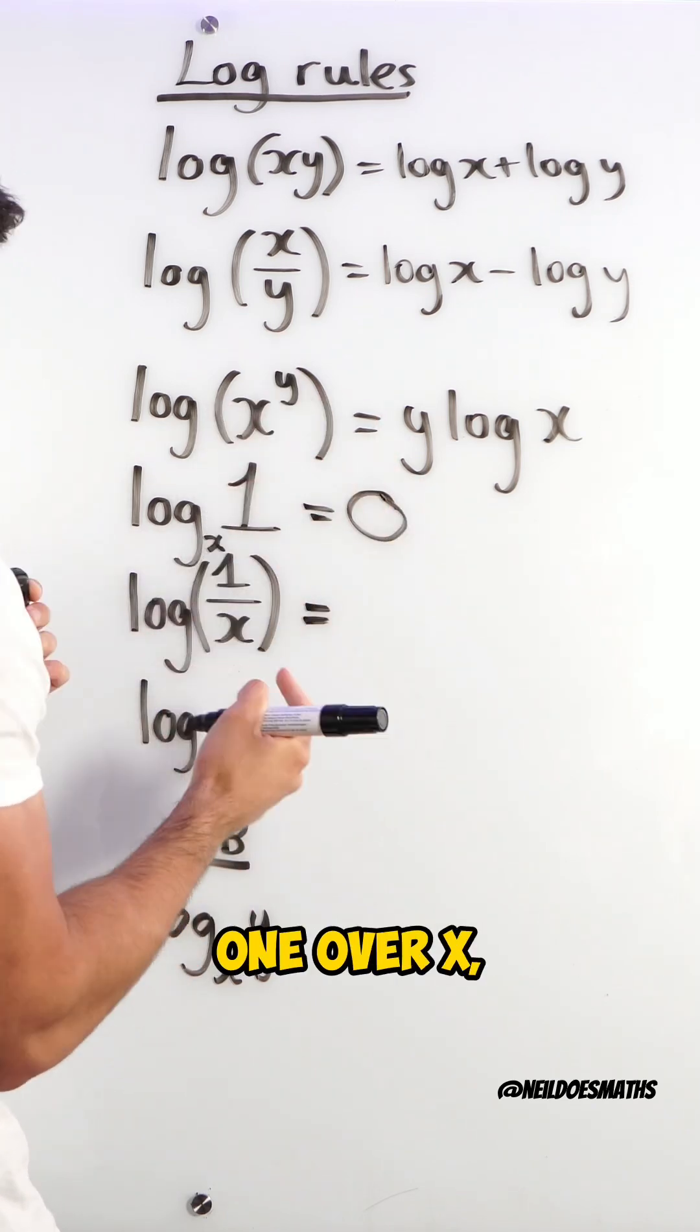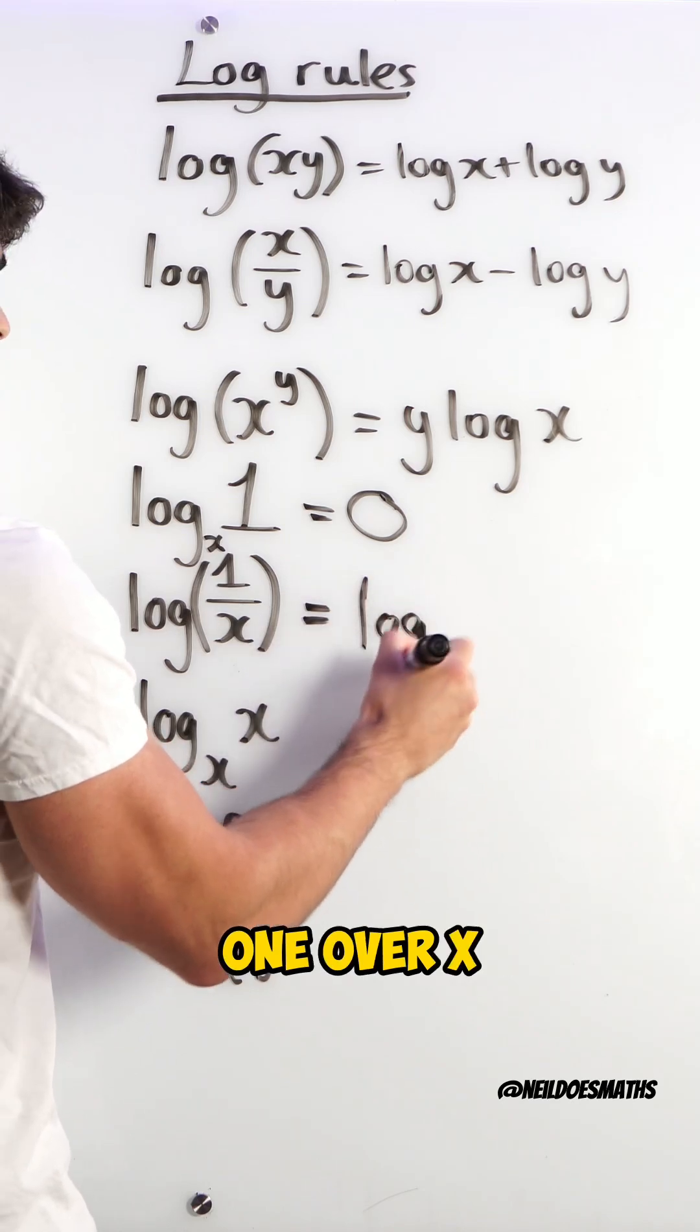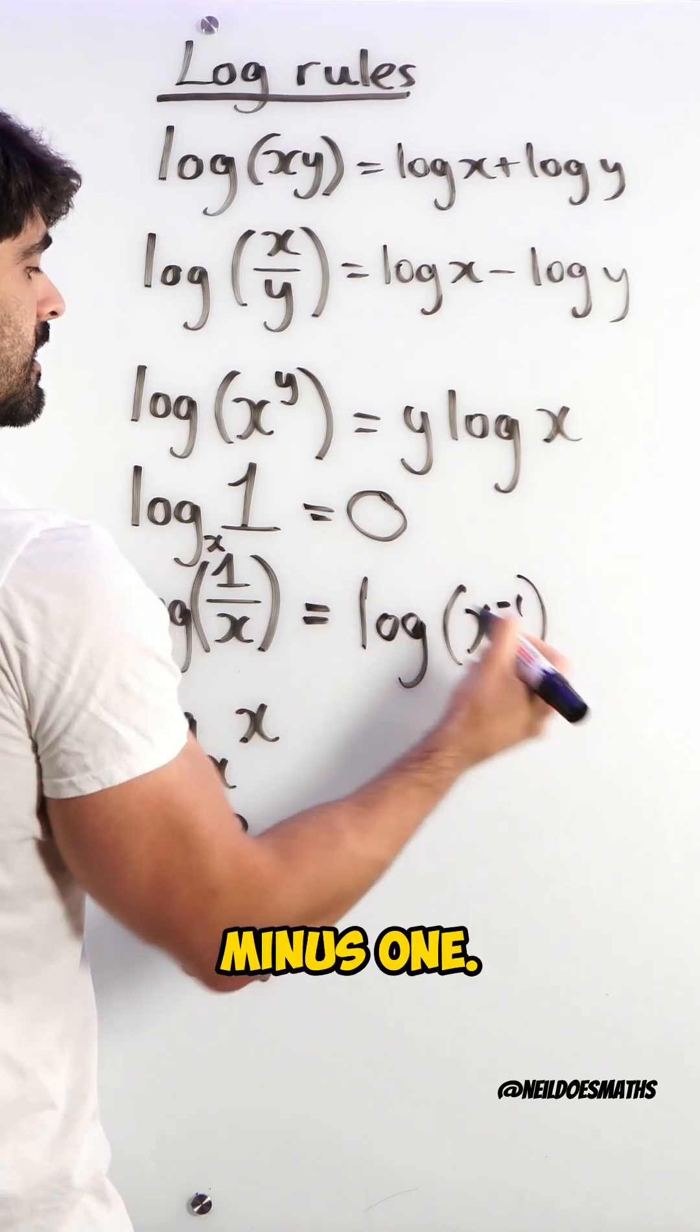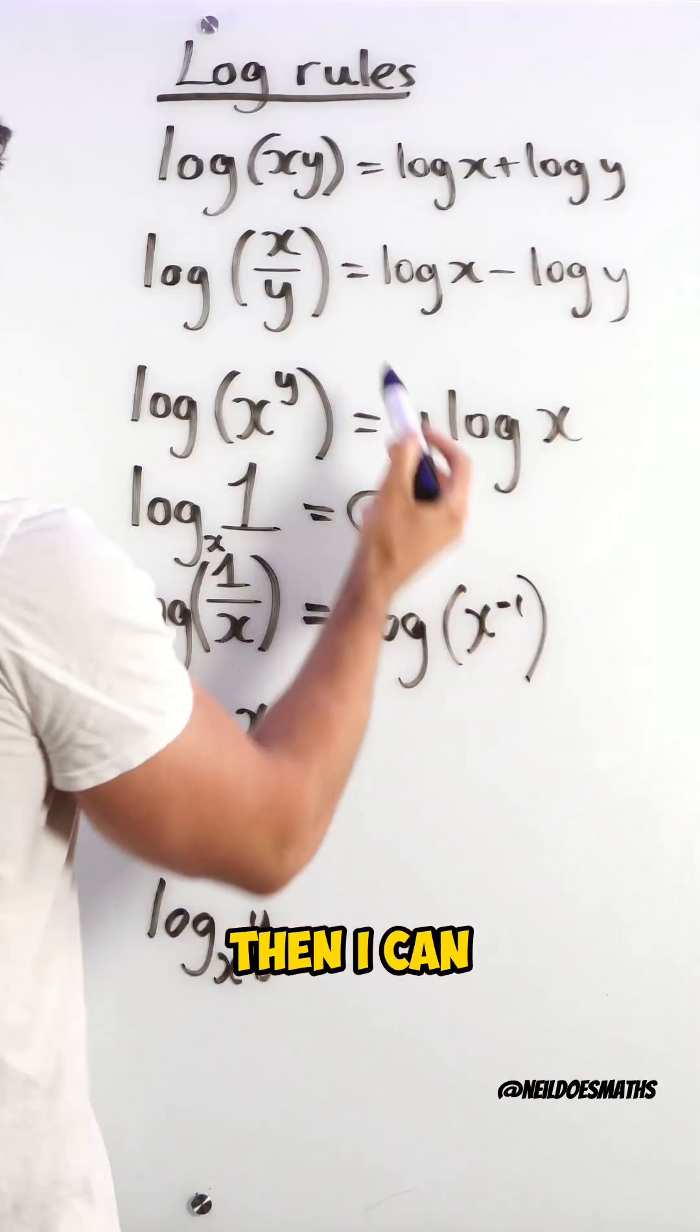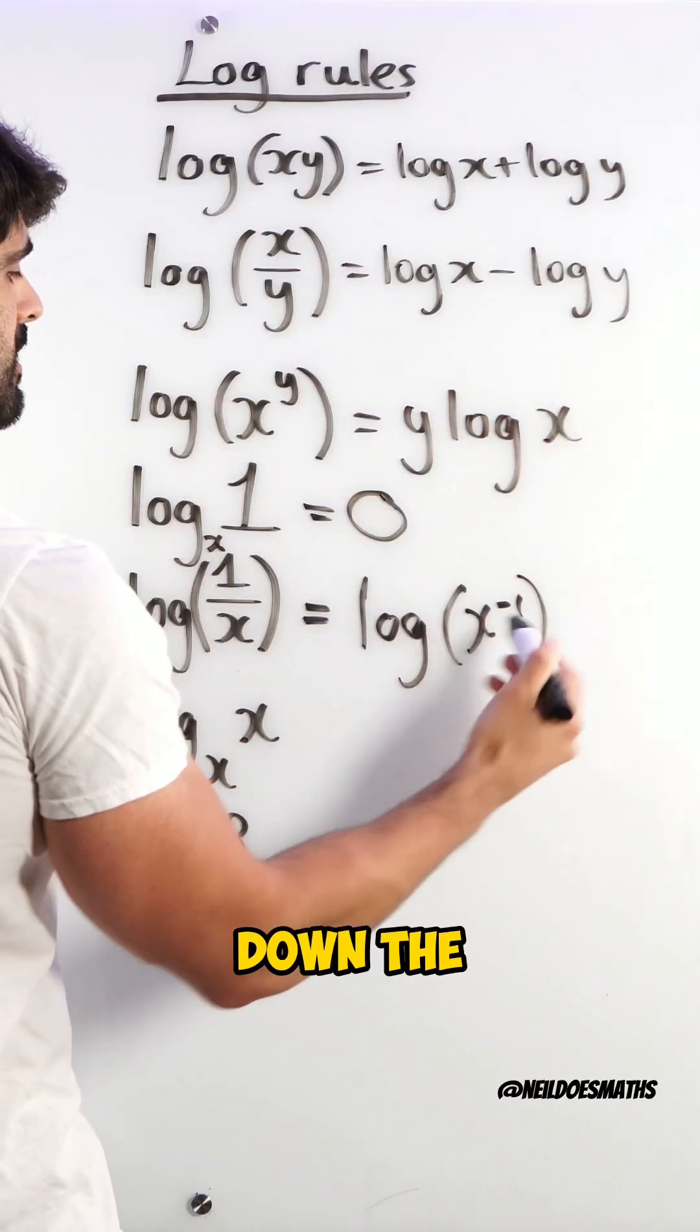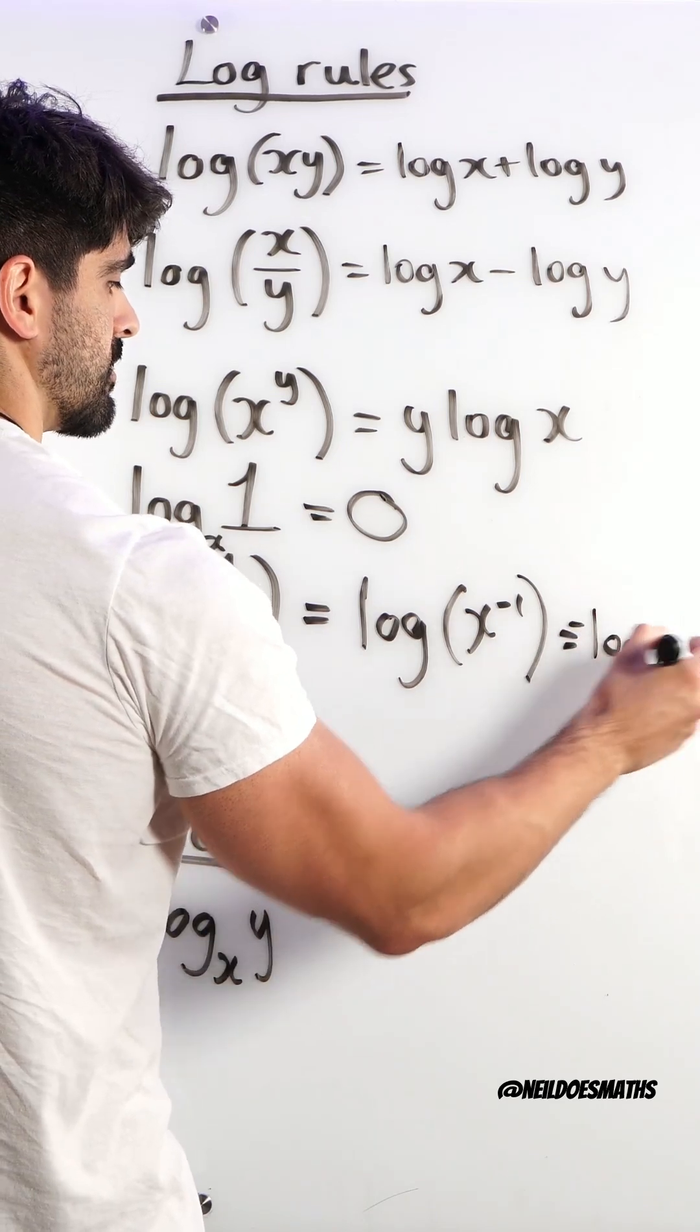This, log of 1 over x, I can rewrite 1 over x as x to the power of minus 1. That means reciprocals. Then I can use this rule here and bring down the negative. Minus log x.